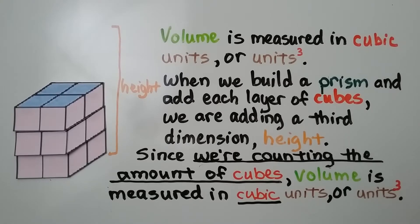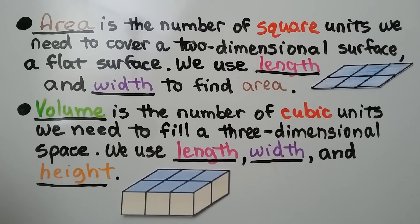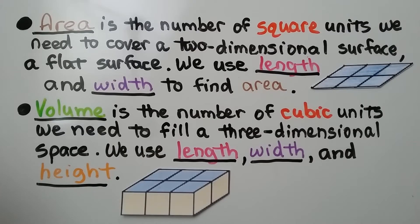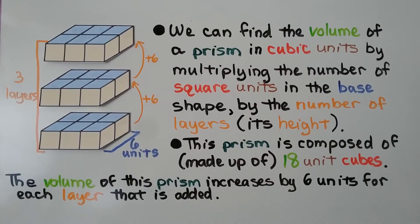This rectangular prism has a height of three units. Area is the number of square units we need to cover a two-dimensional surface — a flat surface — and we use length and width to find area. Volume is the number of cubic units we need to fill a three-dimensional space; we use length, width, and height.